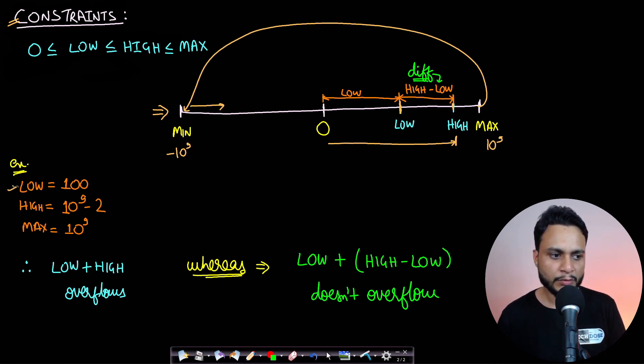If we take an example, let's say the low value is 100, the high value is 10 to the power 9 minus 2, and let's assume the max to be 10 to the power 9. Now if you just add low plus high, it is definitely going to overflow.